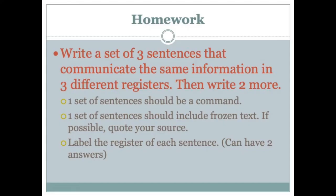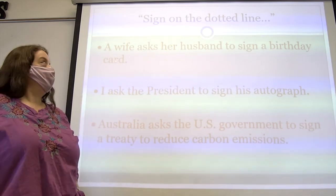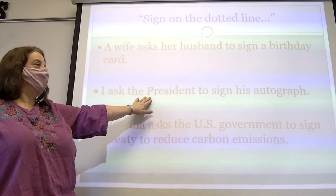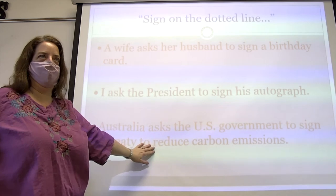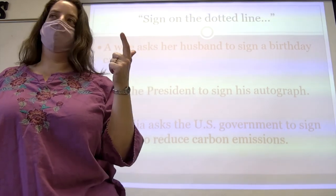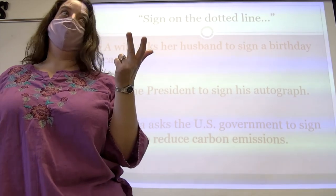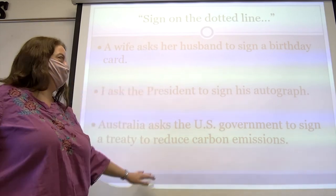Here is your homework. I want you to write a set of three sentences that all communicate the same information but do so in different registers. Once you have that set of three, write two more sets of three. For example — going back to the Joe Biden example: 'Honey, sign this before you go' versus 'Mr. President, I'd be honored if you'd give me your autograph' versus the formal government-to-government request from Australia. All asking for the same thing, but the relationship dictates how it sounds.